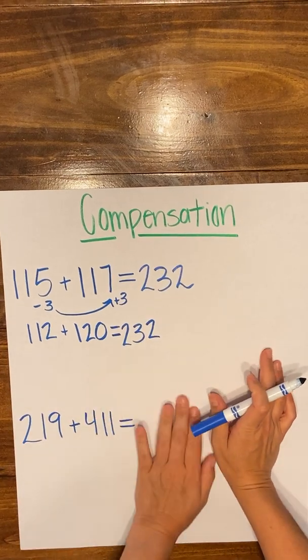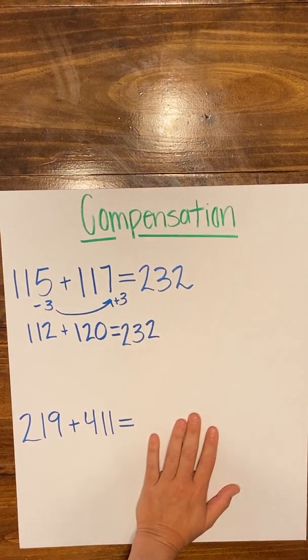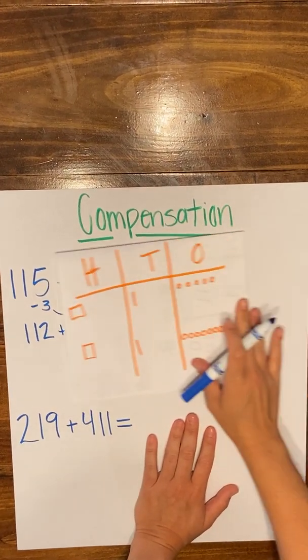Now the strategy is supposed to be done with mental math, but I want to show you just real quickly why this works. Okay?